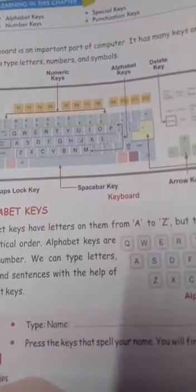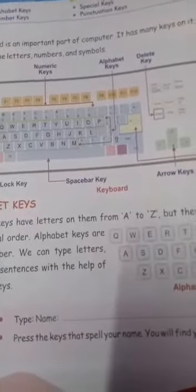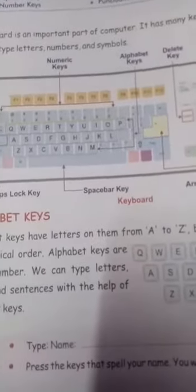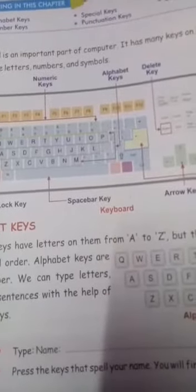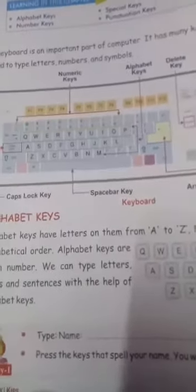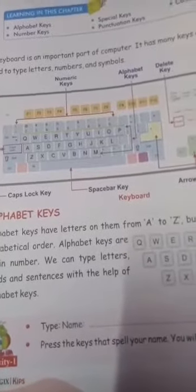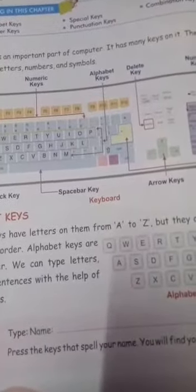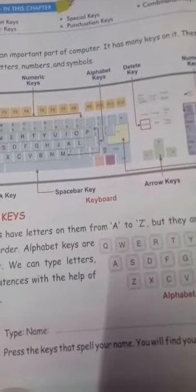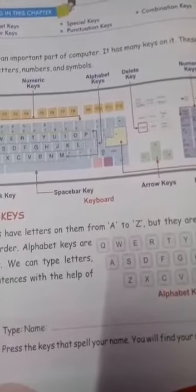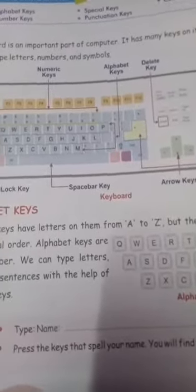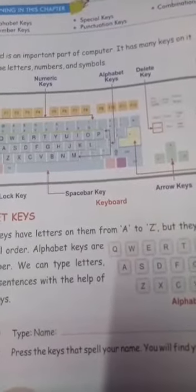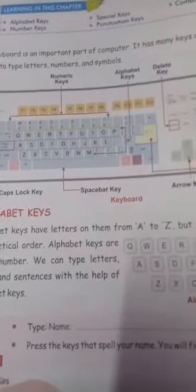Alphabet keys — how many alphabets are there, children? Yes, there are 26 in number. And all these alphabets we use to type letters, words and sentences. Suppose we want to write some words like 'apple', or we want to write our name, or we want to write some sentences, we will use these letters. So the use of alphabet keys is to type letters, words and sentences.